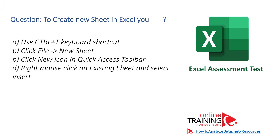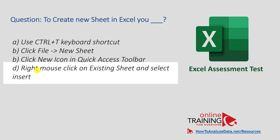To create a new sheet in Excel, you can use Ctrl+T, click File New Sheet, click the New icon on the Quick Access Toolbar, or right-click on an existing sheet and select Insert. Let's use the method of exclusion: Ctrl+T creates new tables, not sheets. File New Sheet doesn't exist. The New Icon creates a new workbook, not a sheet. So by exclusion, the answer is D — right-click on an existing sheet and select Insert.